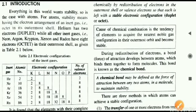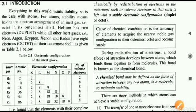Hello everyone, welcome to chemistry class. Today we begin chapter number two: chemical bonding. In this chapter we will be discussing what a chemical bond is, and then we will discuss the different kinds of bonding that are observed between elements to form compounds.